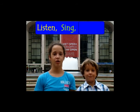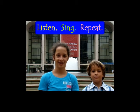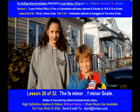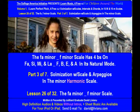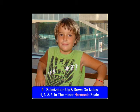Listen, sing, repeat — Lesson 26 of 32: the F minor scale, Part 3 of 7. Solfège with scale and arpeggios in the minor harmonic scale. The F minor scale has four flats on F, B♭, E♭, and A♭. In its natural mode, solfège goes up and down on notes 1, 3, and 5 in the minor harmonic scale.